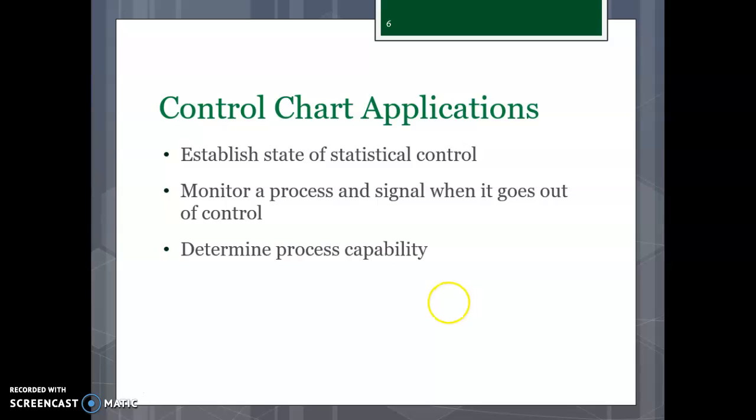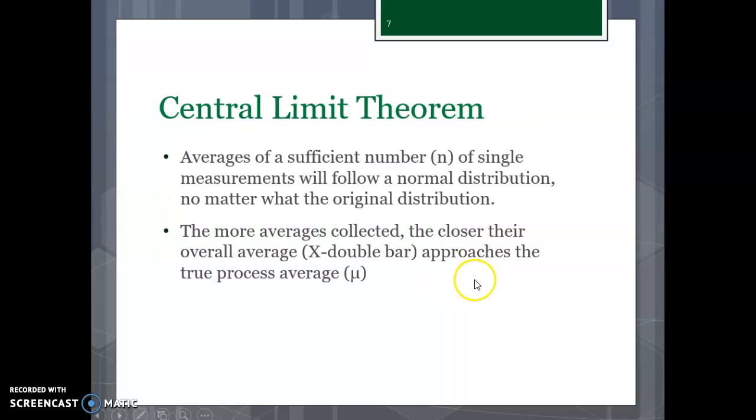So the control chart can establish a state of statistical control, and it can monitor your process, right? And you can tell when you're going out of control. This also helps you determine what's called this process capability, which we'll be doing next week. Again, also in time enough to make sure you don't run out of your 30-day trial.